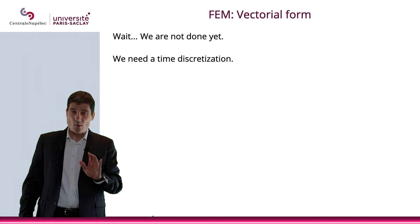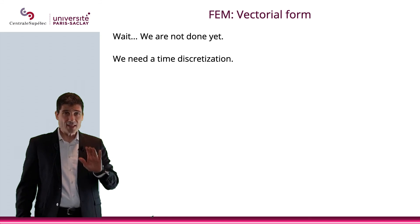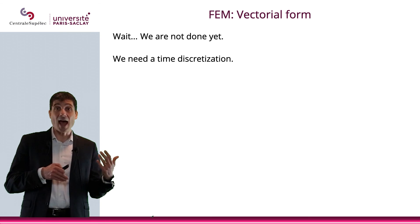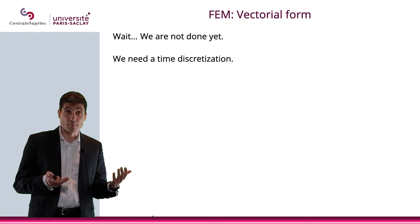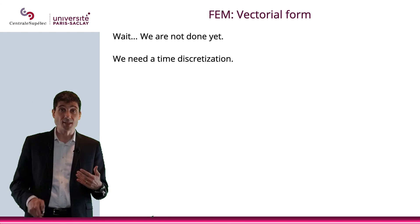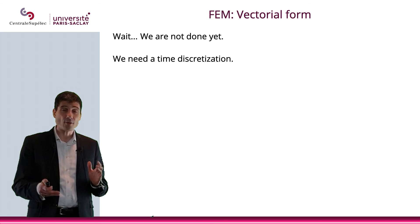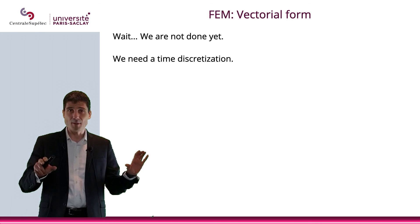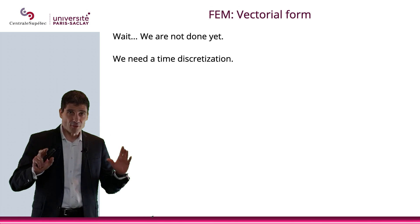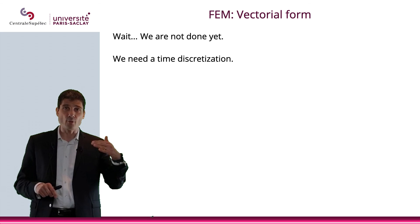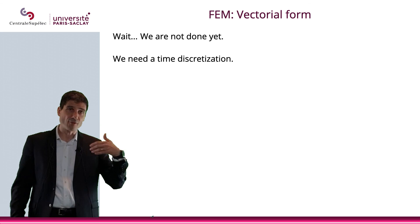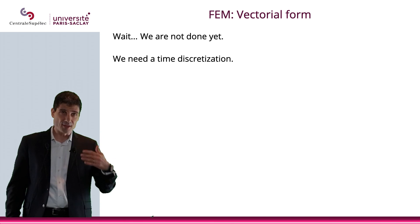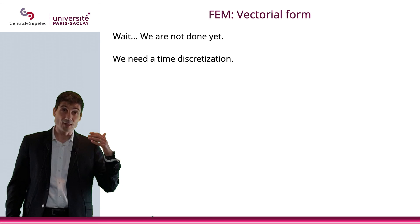But again, we are not done yet. At this point, we have a discretization of space. We have some kind of an IVP, an initial value problem, but we still need to approximate our solution. So either, I mean, we can do the finite difference method. That's what we did in the previous video. We can do the finite element method. This is what we did in this video. In both cases, we are reaching the point where we have an ODE, or if you prefer an initial value problem, that we have to deal with. And this is what we're going to do in the next video.